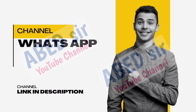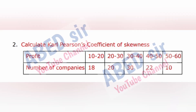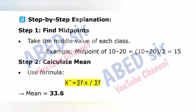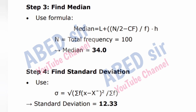Next important long question: Calculate Karl Pearson's coefficient of skewness. Step-by-step explanation. Step 1: Find midpoints — take the middle value of each class. Example: midpoint of 10 to 20 = (10 + 20) / 2 = 15. Step 2: Calculate mean using formula X̄ = Σfx / Σf. Mean = 33.6. Step 3: Find median using formula Median = L + ((N/2 − cf) / f) × h. N = total frequency = 100. Median = 34.0.